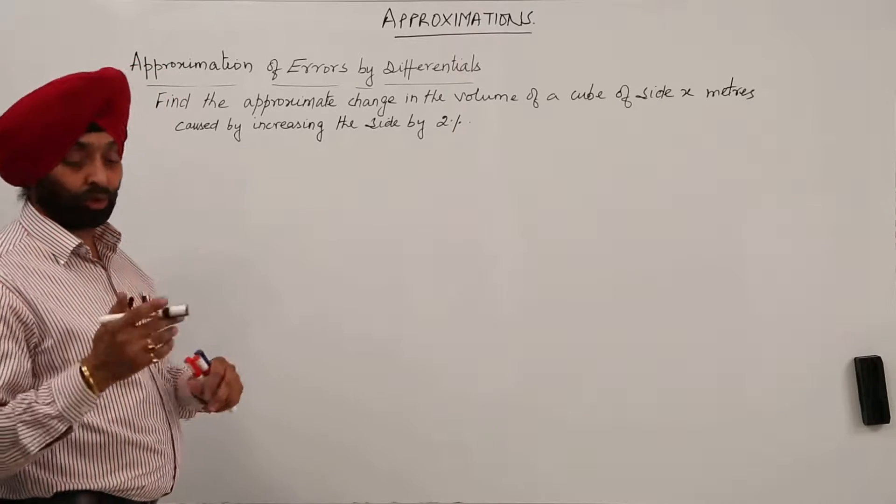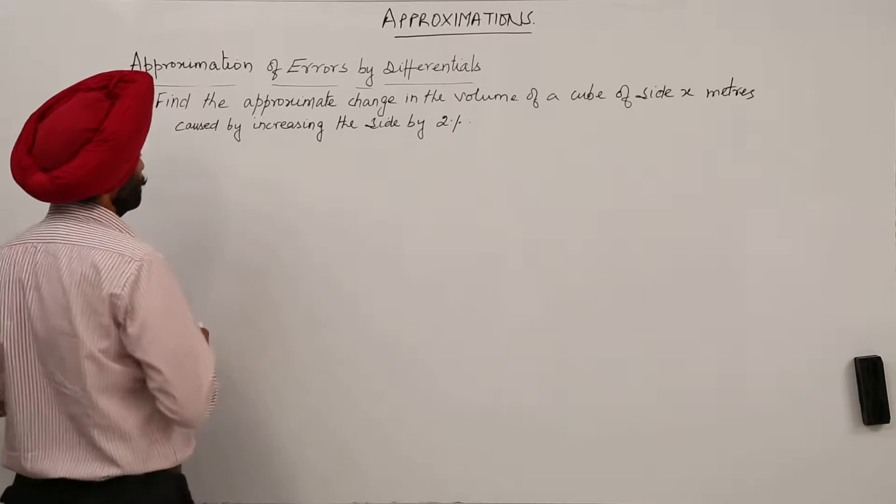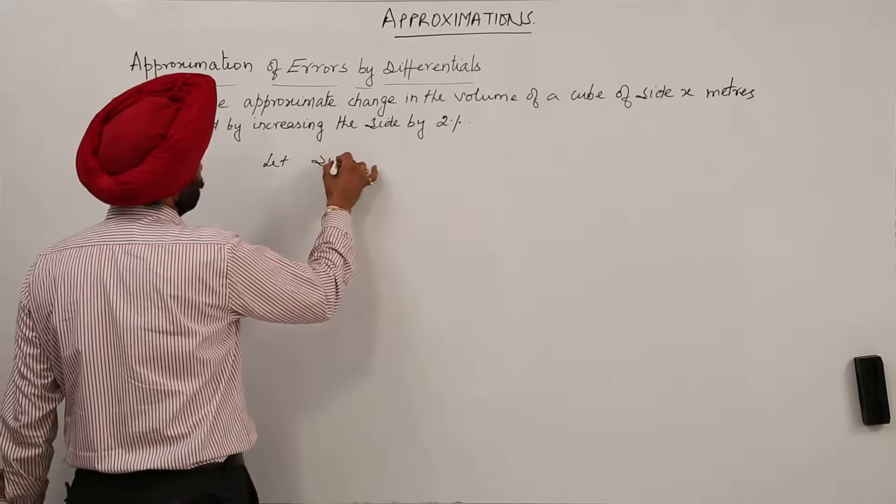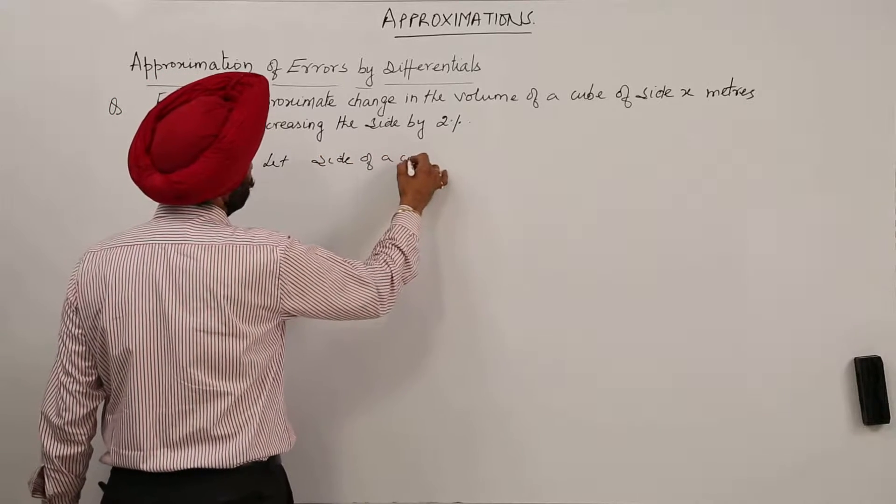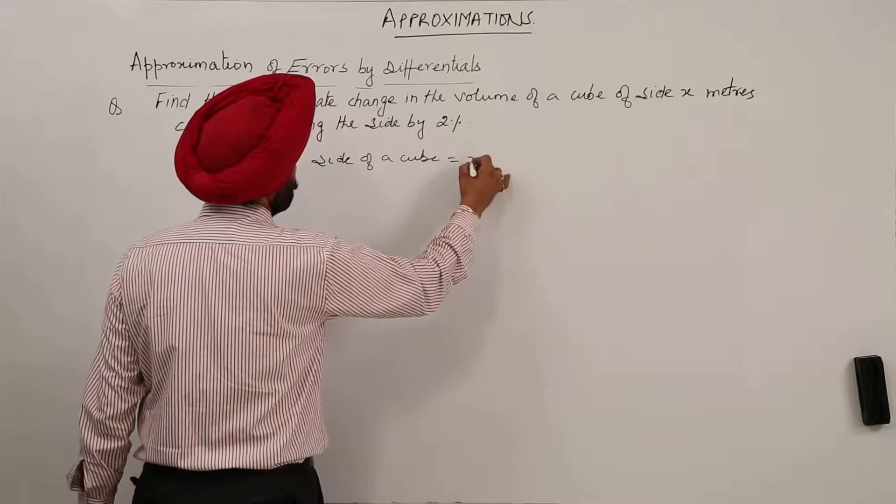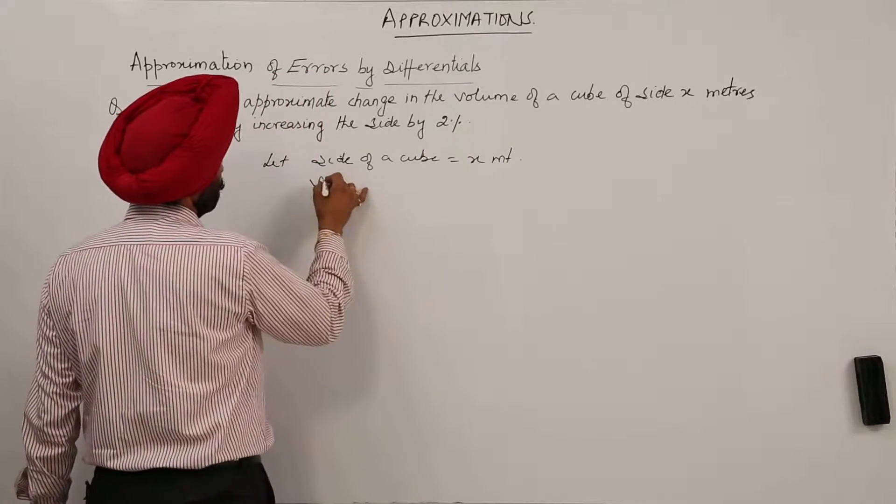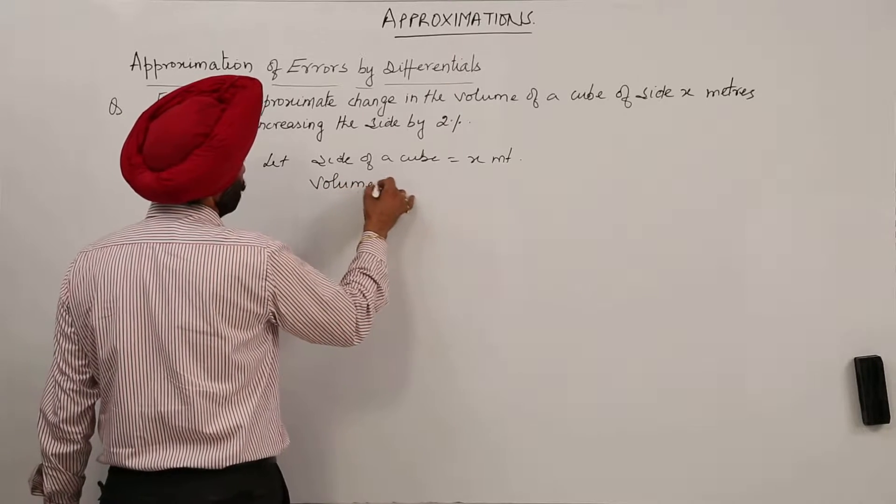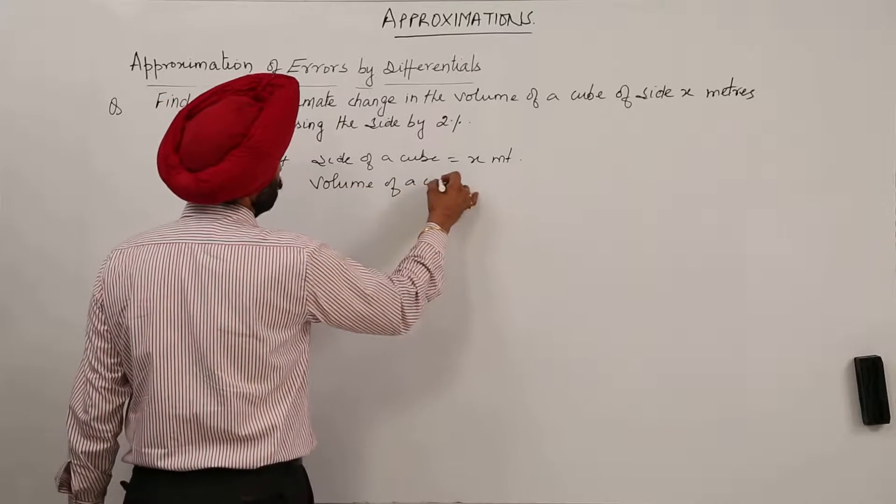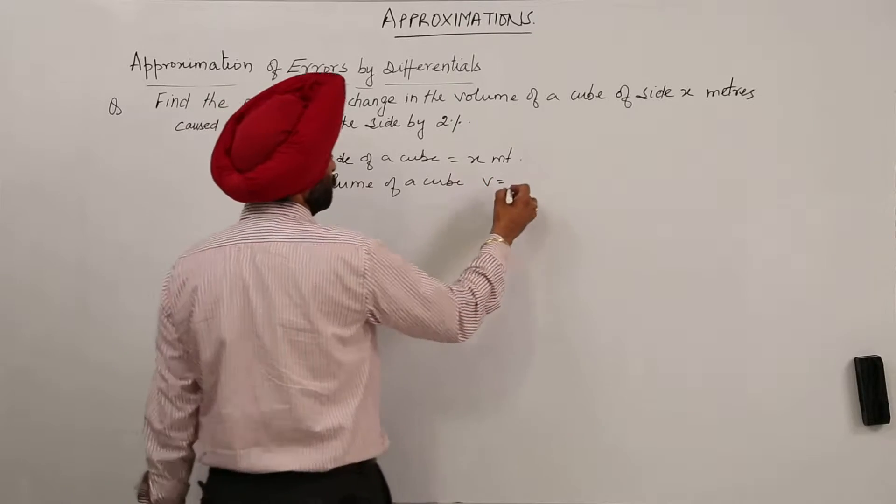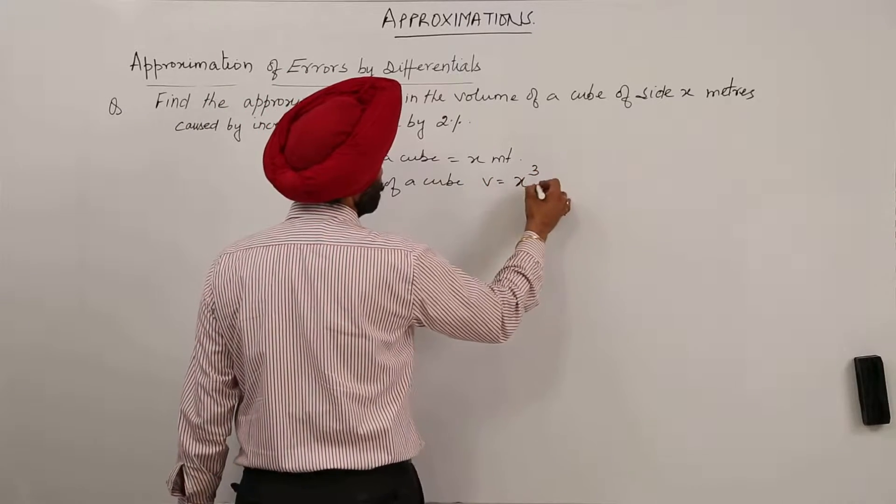a little bit changed form of a question. Okay, now, let side of a cube is equal to x meters and volume of a cube v is equal to x cube meter cube.